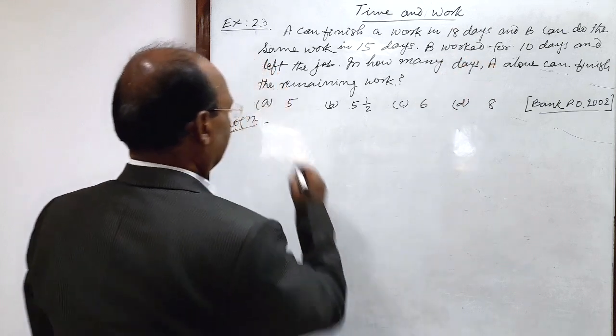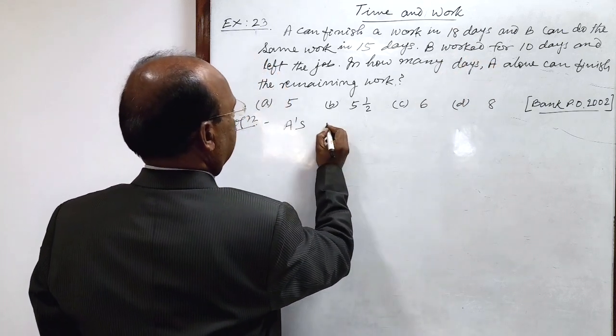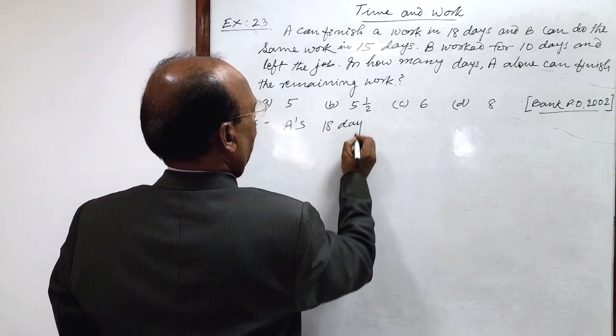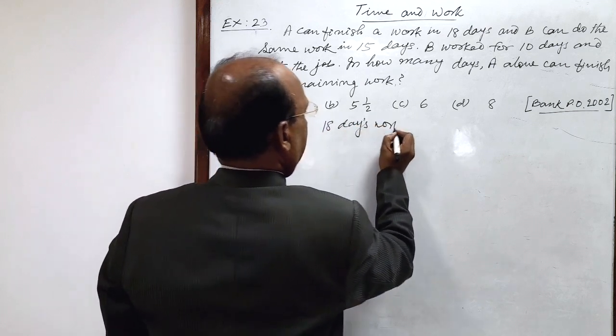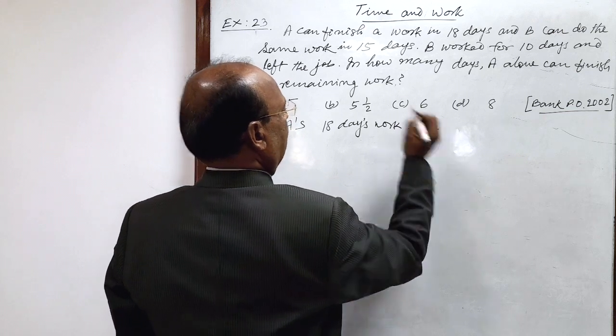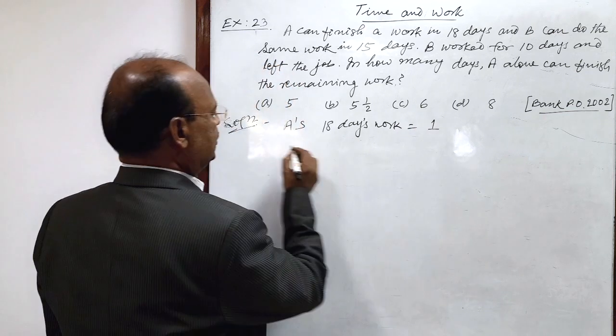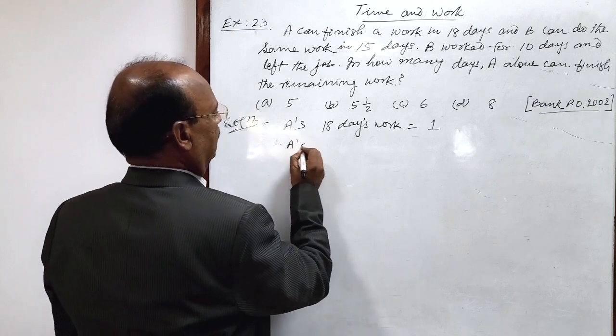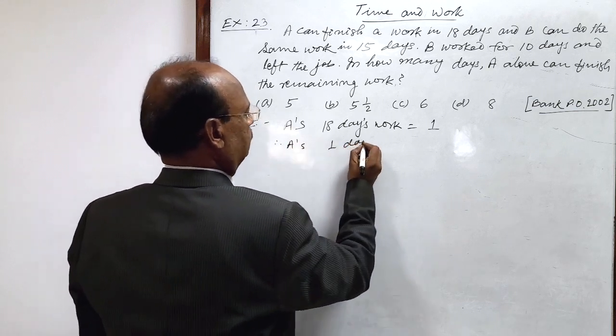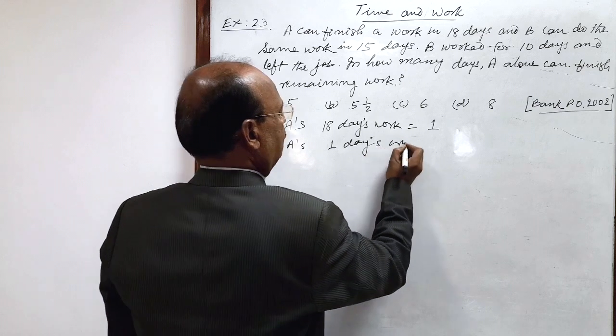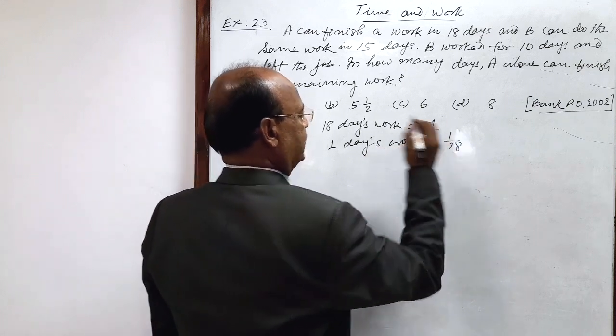So A's 18 days work is 1. One complete work he is doing in 18 days. So by unity method, therefore, A's 1 day's work is 1 by 18.